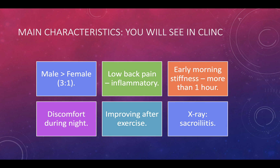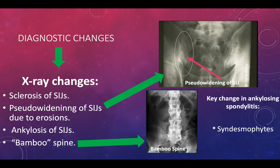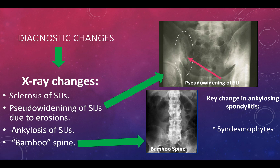On x-ray, the first finding is bilateral sacroiliitis. You can see sclerosis of the sacroiliac joint. There is pseudo-widening of the SIJ due to erosions — the sacroiliac joint is normally quite compact, but on the image there is widening. In the spinal region, mainly the thoracic and lumbar areas, there is fusion of the vertebrae leading to a bamboo spine — a very straight, firm appearance similar to a bamboo stick.